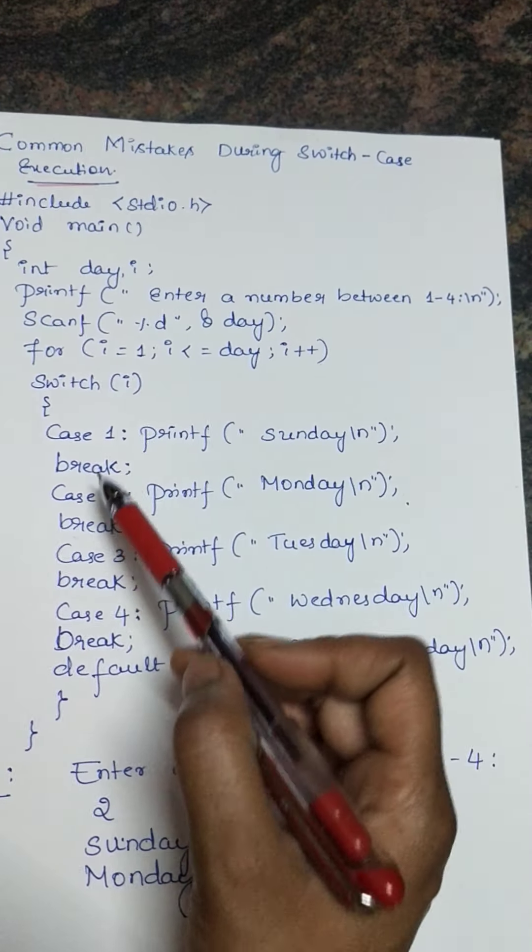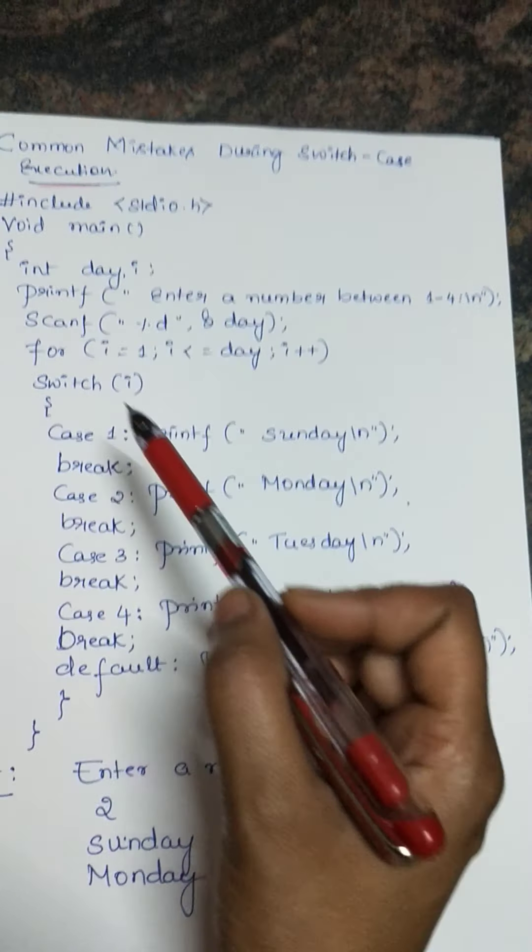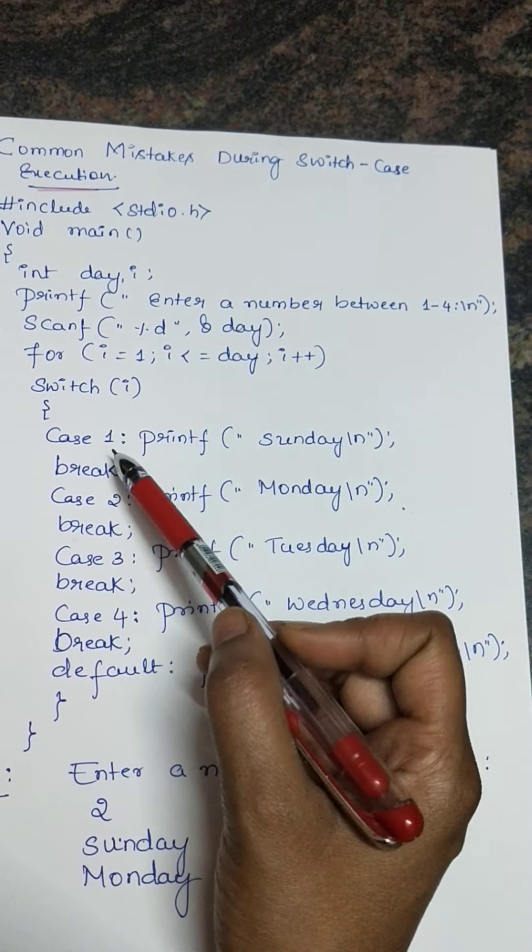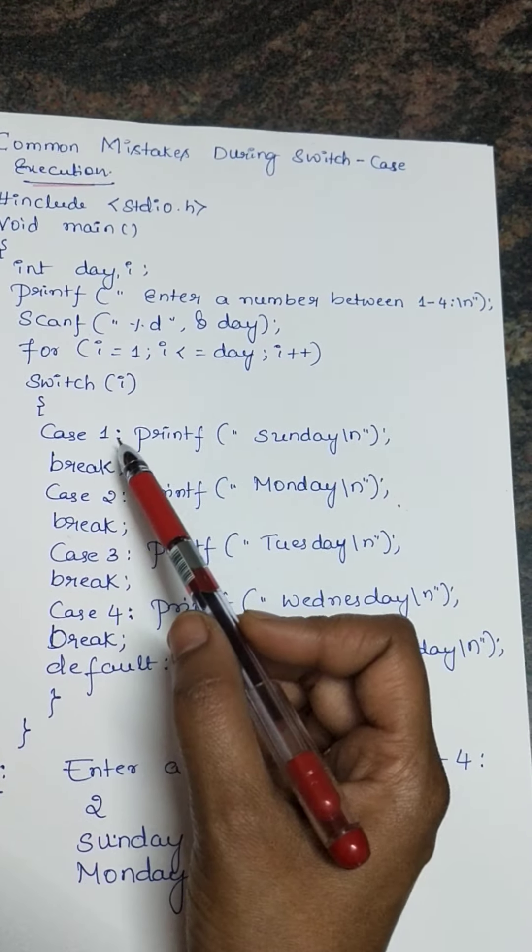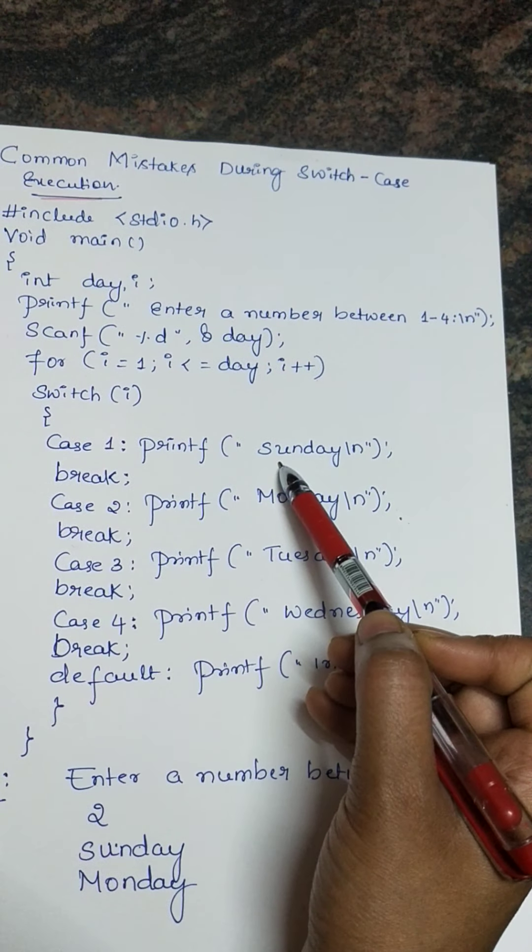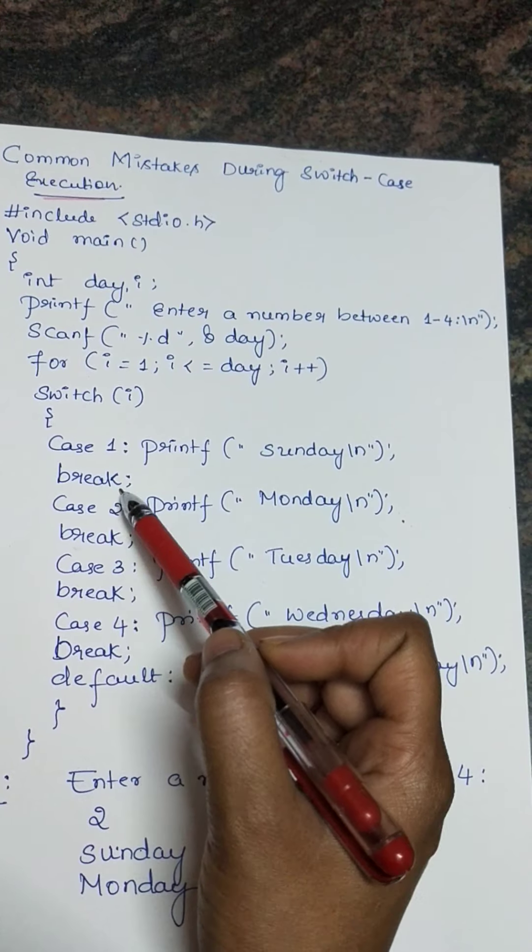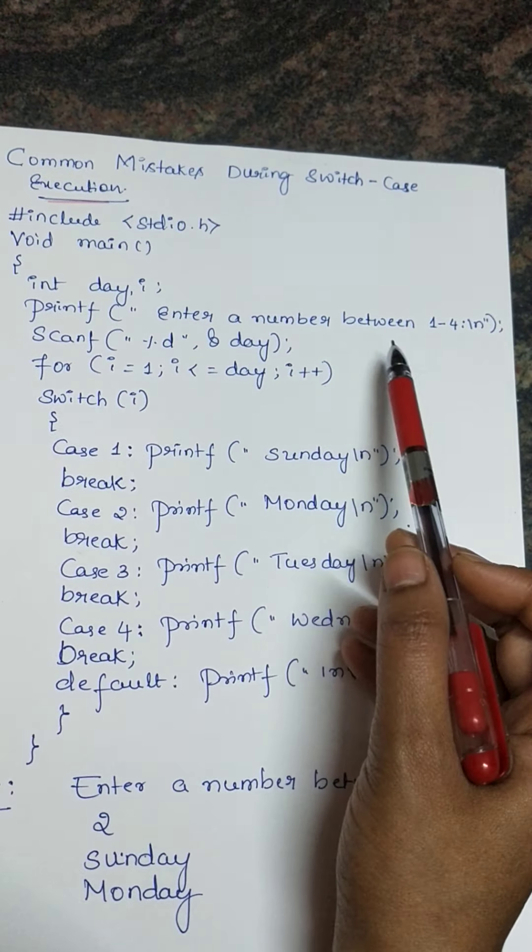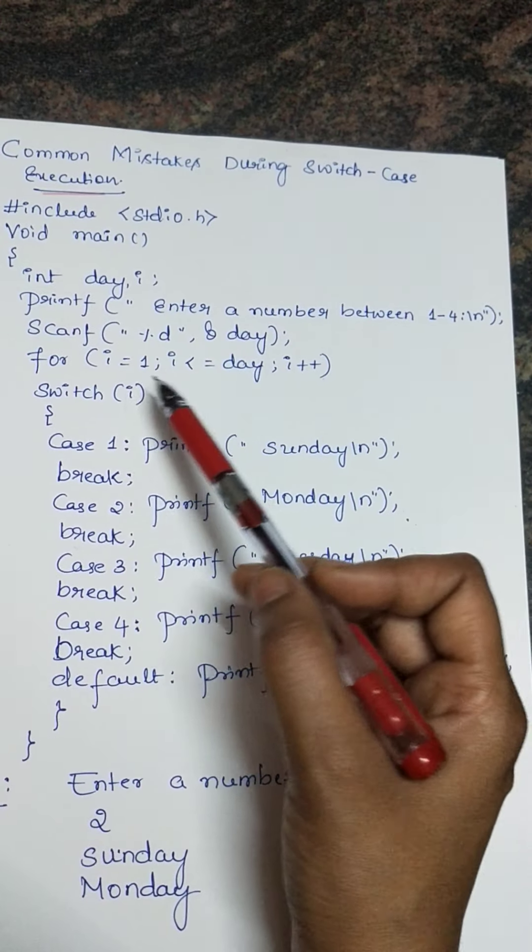So if my value is 1, if i value is 1, suppose if I enter 1, then it will go to case 1 and it will print Sunday and it will break. Again it will ask for enter the number between 1 to 4.